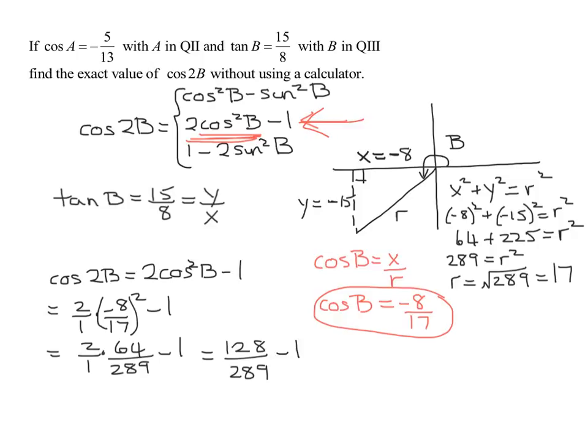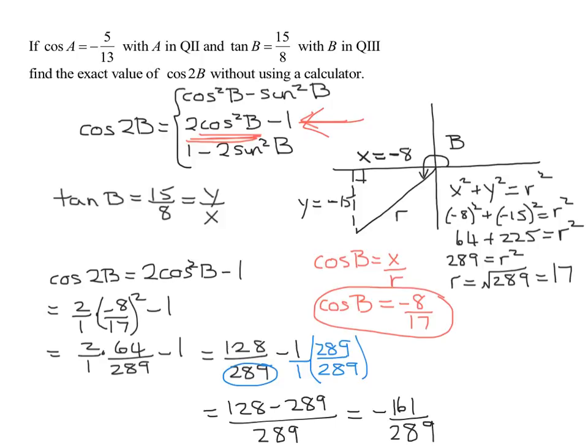To add fractions, you get a common denominator. What's the common denominator? 289. So I'm going to have to multiply 1 by 289 over 289. So I'm going to get 128 minus 289 over 289. And that is equal to negative 161 over 289. So that is the exact value of the cosine of 2B.